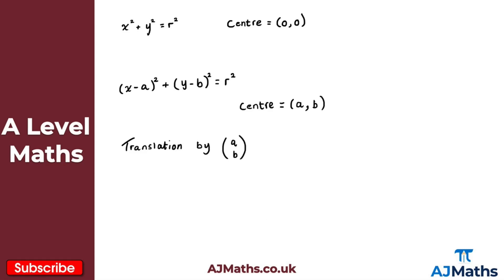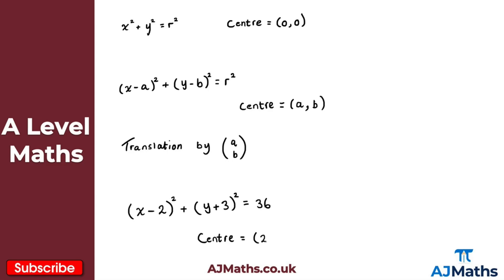Let me pick one example to highlight this. If we had x minus 2, all squared, plus y plus 3, all squared, equal to 36, then the center of this circle would be positive 2 and minus 3 — so (2, -3). Notice the sign changes: it's x minus 2, so the x-coordinate is positive 2; and with y plus 3, the y-coordinate is minus 3. The radius would be the square root of 36, giving us 6.